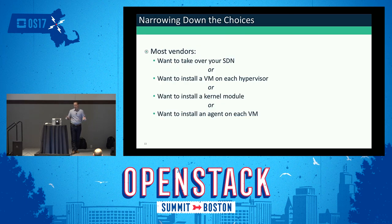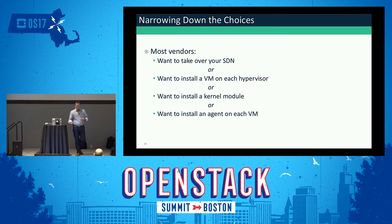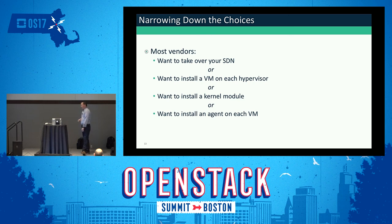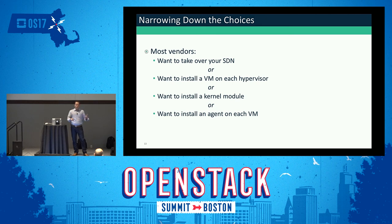We started looking at our choices. Some vendors want to take over your SDN or provide their own SDN — that was a no-go; we were happy with our implementation. Another common approach is to install a VM on every hypervisor to control traffic for peers on that hypervisor. While a viable approach, we had concerns that it would further complicate our ability to support the environment and do rolling upgrades and move workloads around. So we decided we probably didn't want to do that.